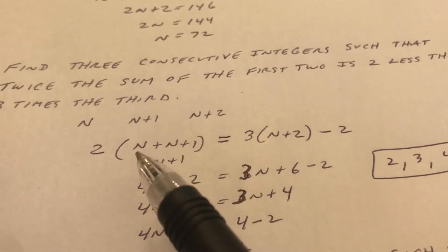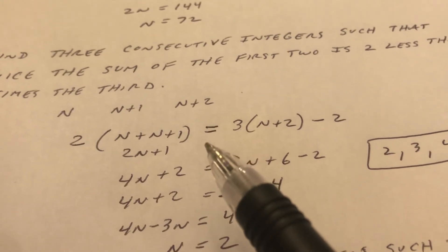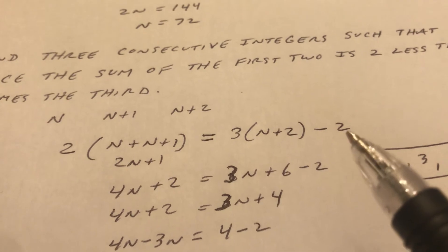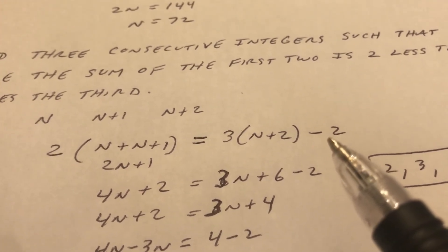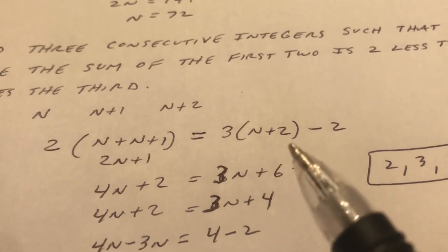So twice the sum of the first and second equals—so you see the is, that's the equal sign. Two less than is minus 2. I like to write it at the end of the far right there. Three times the third.